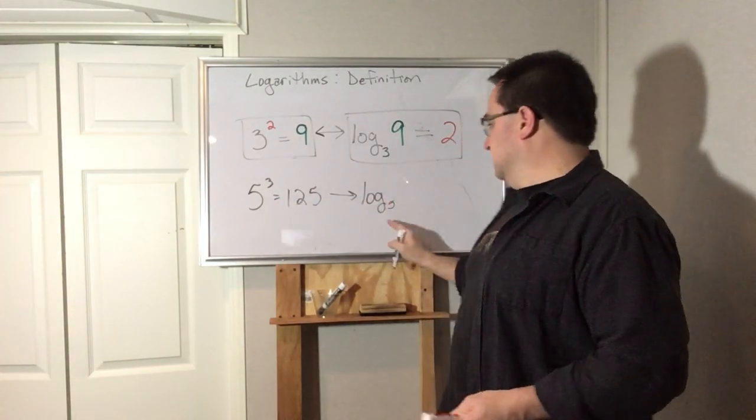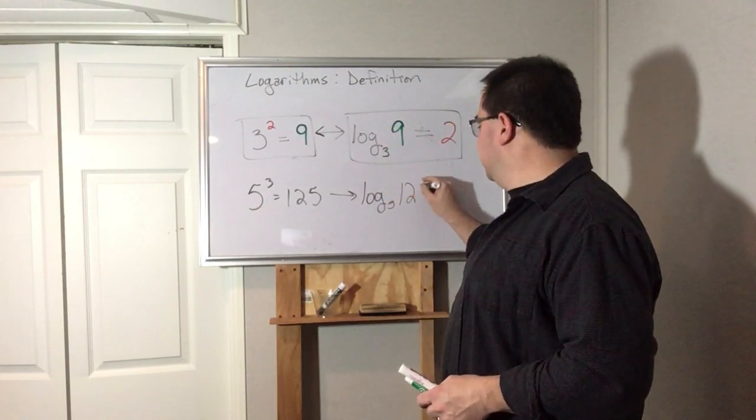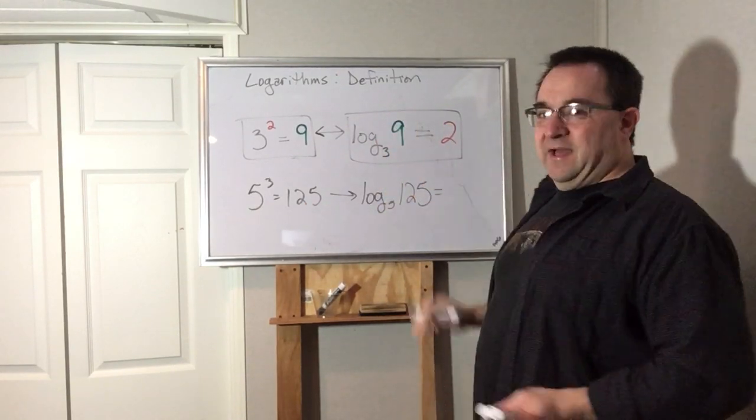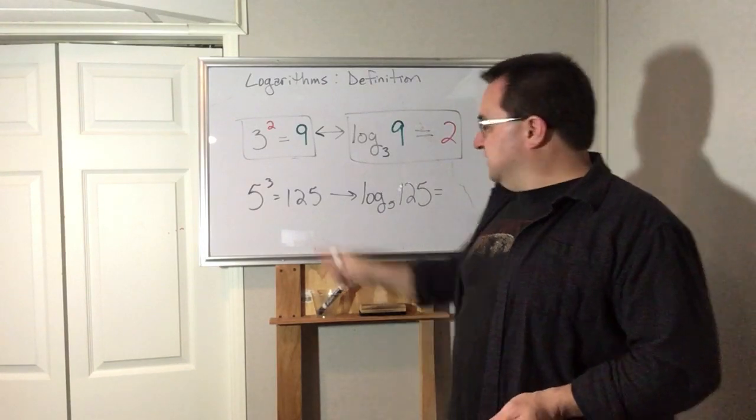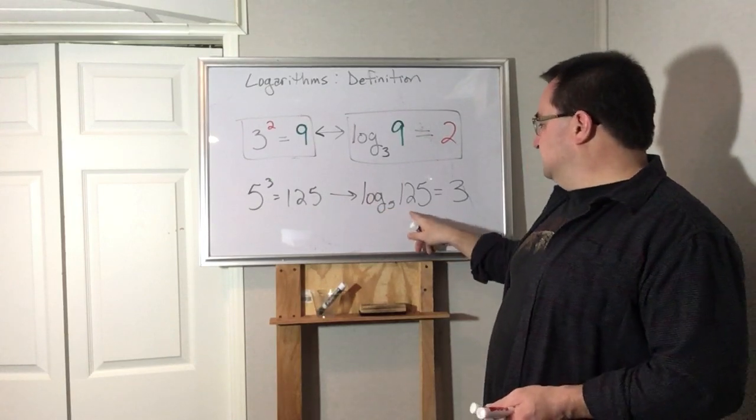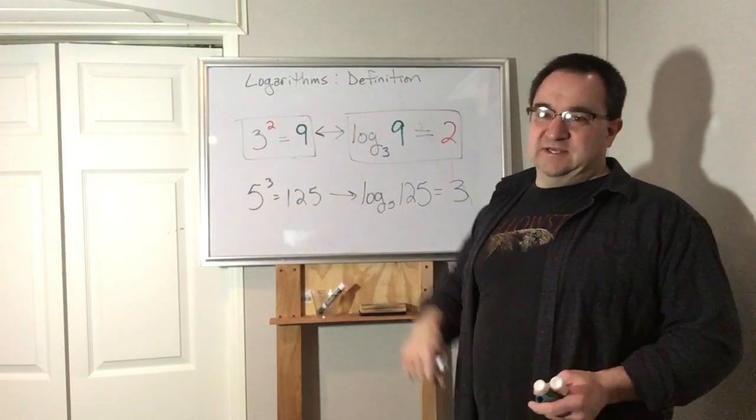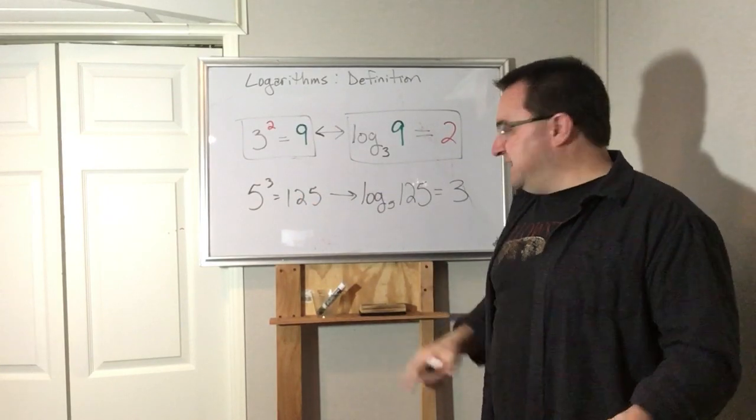I have a log and then the base number, this little subscripted number, is the base number over here, the number that's being raised to the power. So that goes here. The answer goes here. And the number all by itself on the other side of the equal sign is the power. So log base 5 of 125 is 3. That's the same exact thing as this, just a different way to say this.